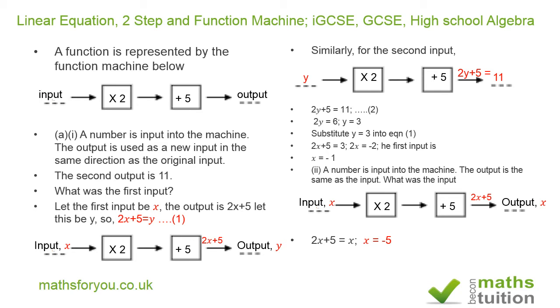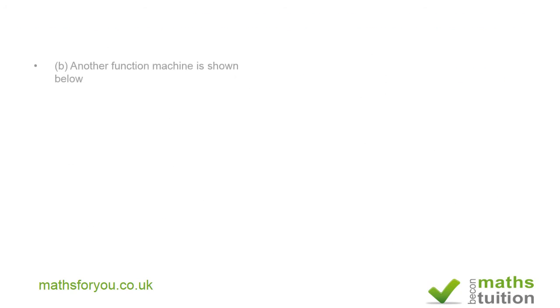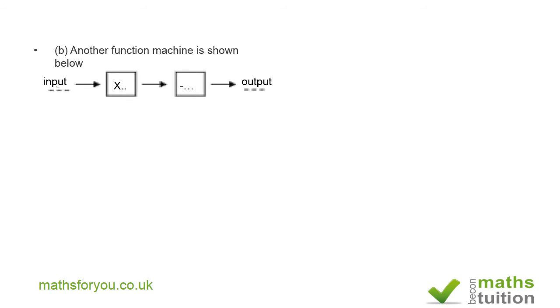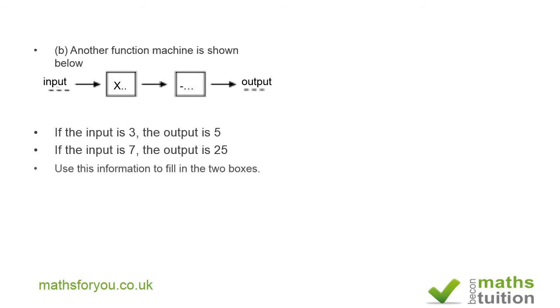Now, this is the third question. And it says, another function machine is shown below. And it then says, if the input is 3, the output is 5. And if the input is 7, the output is 25. And it says, use this information to fill in the two boxes.